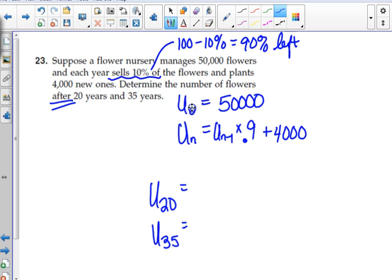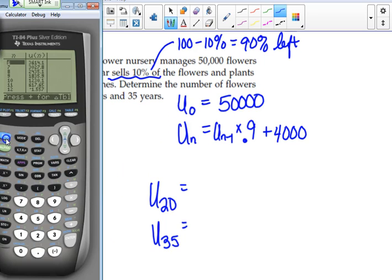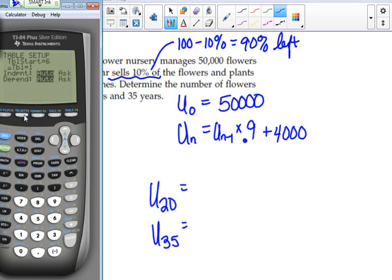What do we want to call that 50,000? Because it says after 20 years, and this is definitely not after one year, so we want to call it 0. All right. So then all you've got to do is scroll down, right? What's the other option if you don't want to scroll down? Yeah, you can go to 2nd window and go Ask Auto. And then you could, when you go here, you'll just type in a 20 or a 35. Okay.